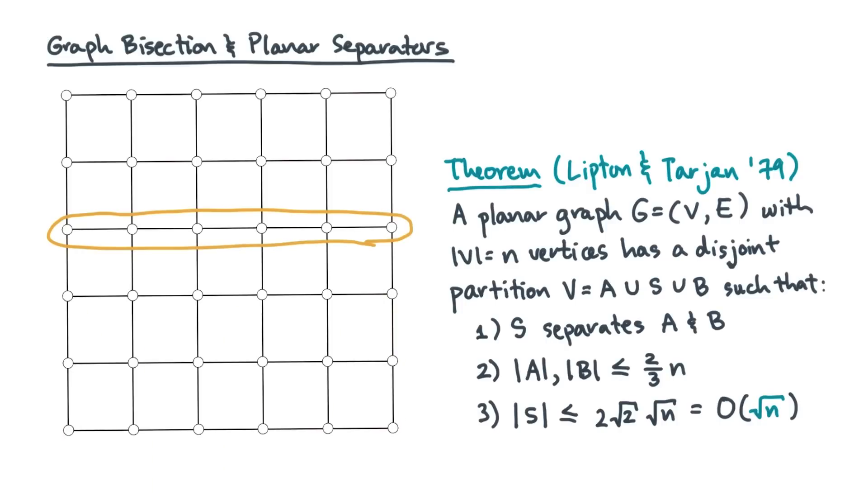Now, the existence of a planar separator does not guarantee you can minimize the edge cut efficiently. But, keeping this lattice graph in mind, an algorithm that can find this separator should, heuristically, find a decent partition.